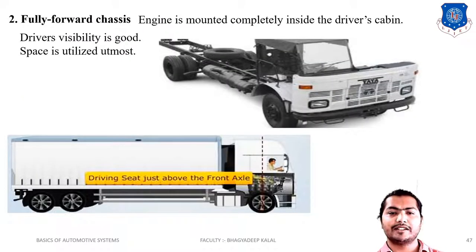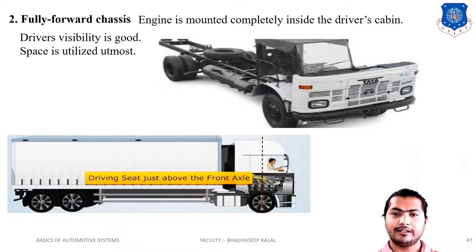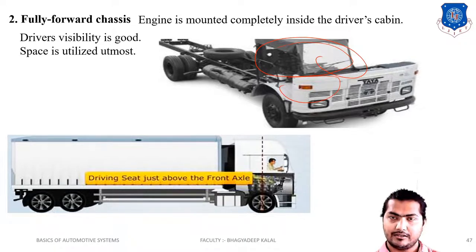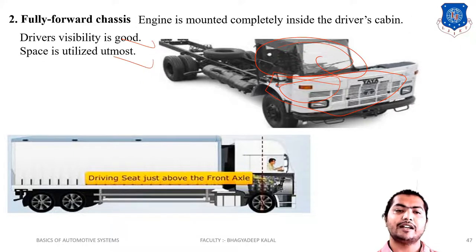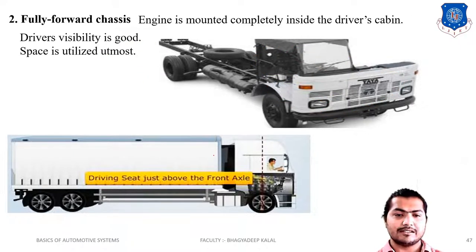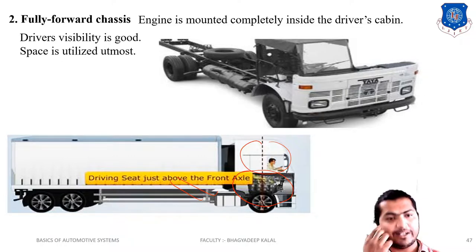Next is the fully forward chassis. In this chassis, the engine is mounted completely inside or below the driver's cabin. Like video coach buses — the engine is mounted just below the driver's seat. The benefit is that driver's visibility is good and space utilization is also good. The driving seat is just above the front axle, which is the defining characteristic of the fully forward chassis. This way we can better utilize the available space.